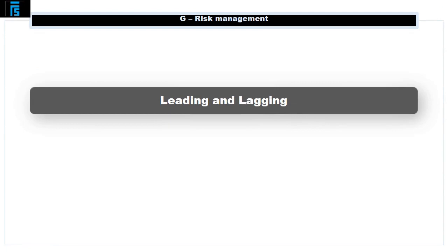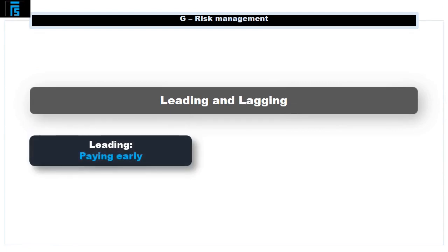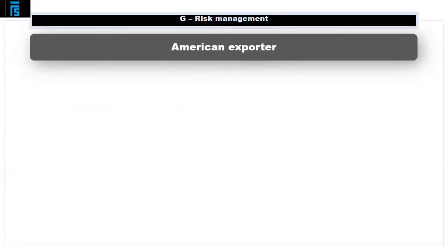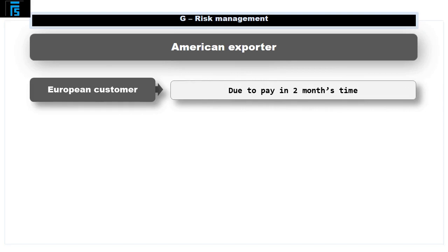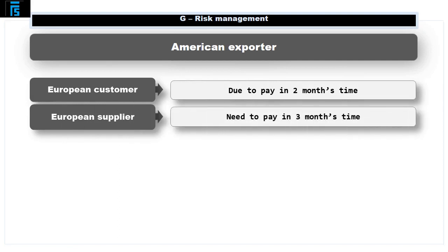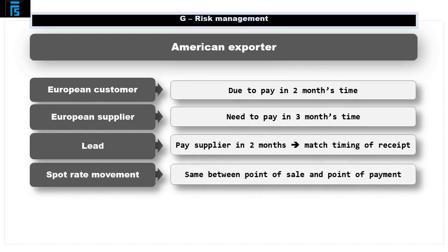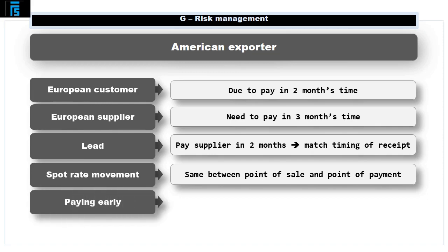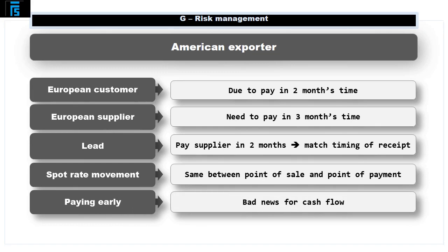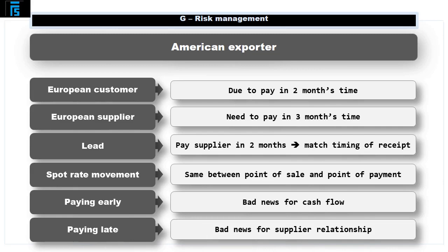Next, let's consider leading and lagging. Leading means paying early and lagging means paying late. Suppose we are an American exporter with a customer in Europe due to pay us in two months time. If we also have a European supplier we are due to pay in three months time, we may choose to lead and pay the supplier in two months time to match the timing of the receipt from our customer. This means the movement in the spot rate will be the same for both transactions. However, paying suppliers early is bad news for our cash flow and paying them late is bad news for our supplier relationship.